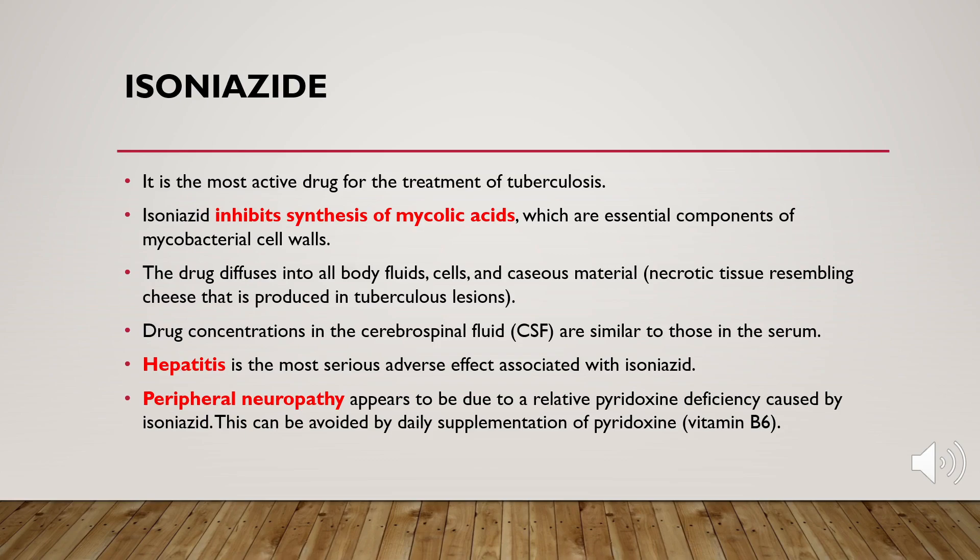The peripheral neuropathy caused by isoniazid is due to pyridoxin (vitamin B6) deficiency. If you provide the patient with daily pyridoxin supplementation, you can avoid the development of peripheral neuropathy.